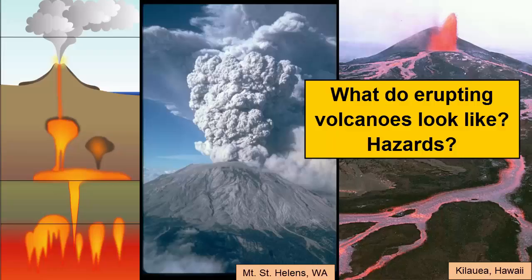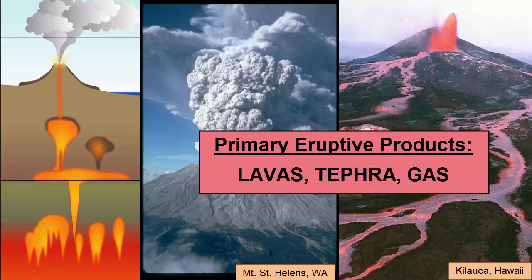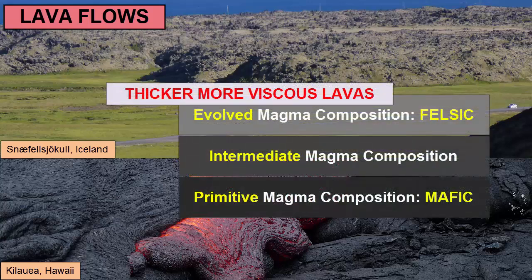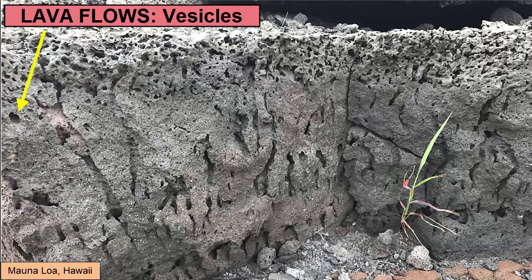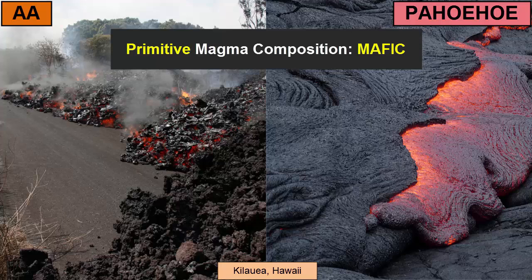What do erupting volcanoes look like during and after eruptions? What kind of hazards are associated with them? Are all volcanoes equally hazardous? The primary products erupted from volcanoes are lava flows, tephra, and gas. Lava flows vary considerably in their behavior depending on their composition. Thicker flows mean more viscous evolved lavas that likely didn't travel far from the vent. Thinner flows were less viscous, more primitive lavas that likely did travel far from the vent. If these now-solid lava flows contain vesicles throughout—holes in the rock like Swiss cheese—it means the gases were freely escaping from the lava as it flowed and cooled around them. Primitive mafic lava flows can be divided into two types, pahoehoe and aaa lavas, which we can recognize from their thickness and surface features.